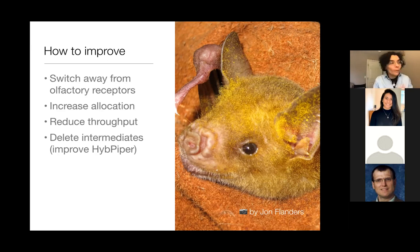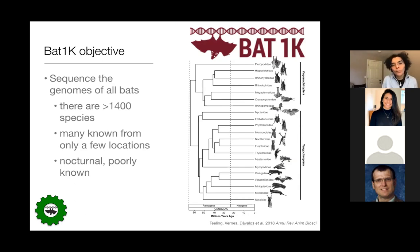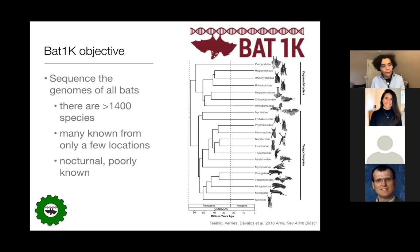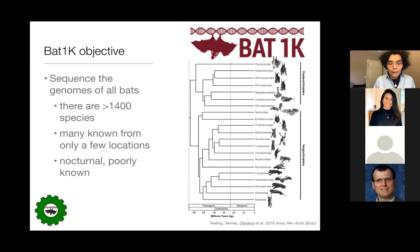Now I'm going to talk about the next project, BAT1K. There are 1,400 species of bats that have been described in the world — that's where the '1K' comes from. The project aims to sequence the genomes of all bats. Many of these bats are only known from very few locations; they're nocturnal and really poorly known, so we're striving to find bats wherever we can. Bats are really special, and we all need to study them because we don't want to get caught in the next pandemic, which might have a bat origin, just like several other coronavirus pandemics have had.